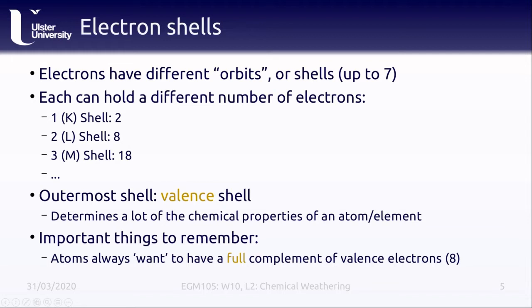Electrons have certain energy levels, also referred to as orbits or shells. Each of these different shells can hold a different number of electrons, all the way up to 2n² where n is the number of the shell, though we don't generally see more than 32 electrons in an individual shell. The first shell, also called the K shell, can hold up to two electrons. The second shell, also called the L shell, can hold up to eight electrons, and so on.